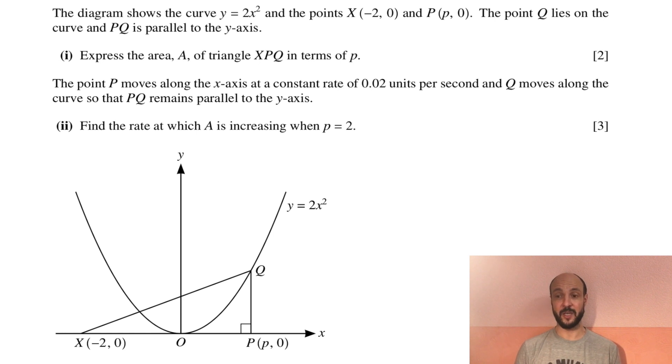The diagram shows the curve y equals 2x squared and the points x brackets minus 2 comma 0 and p brackets p comma 0. The point q lies on the curve and pq is parallel to the y axis.